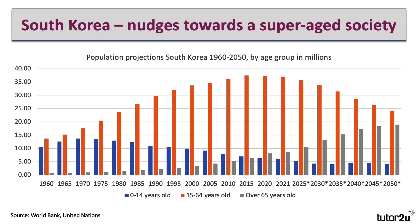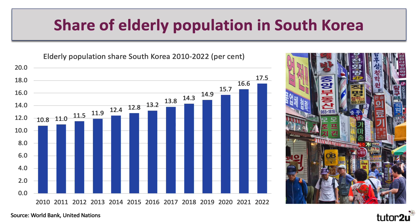South Korea is a really good example of a country which is moving towards becoming a super-aged society. Here's the population data for South Korea, breaking it down: those people 14 years and younger, between 15 and 64, and over 65. You can see that the transition towards the super-aged society is continuing apace, and it's forecast to accelerate as we head towards 2040 and 2050. The share of the elderly population in South Korea has continued to grow — the latest data for 2022 shows it has nudged up to 17.5%, compared to only 11% in 2010.